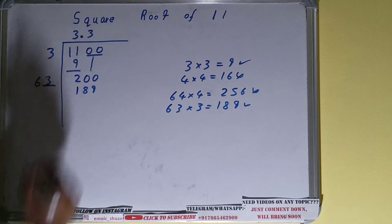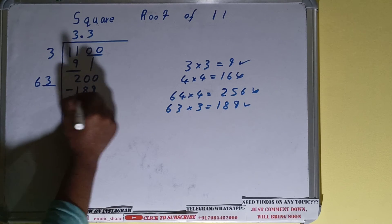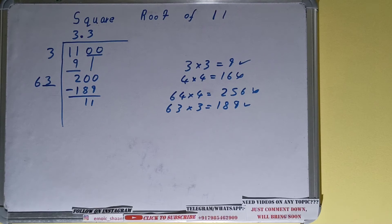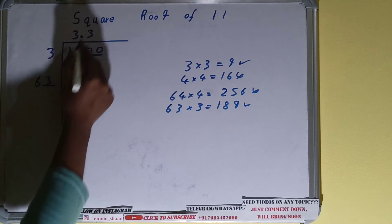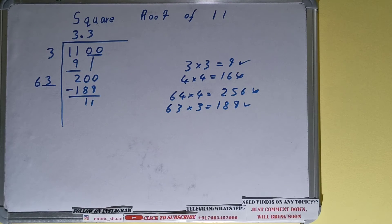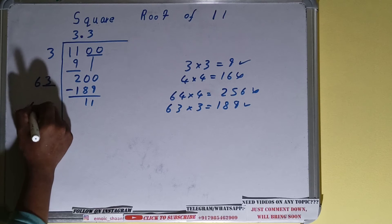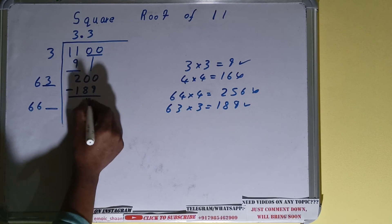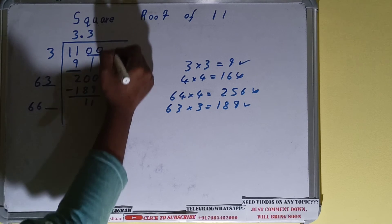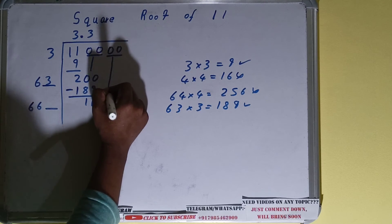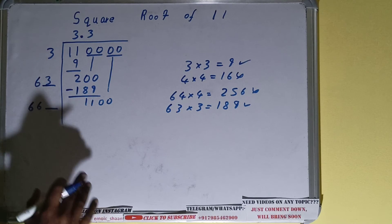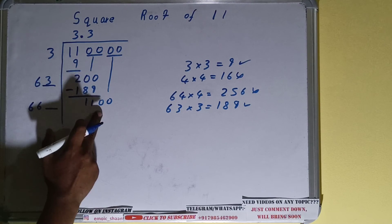We'll be left with 11. Now again, same thing we need to do with the divisor. 63 plus 3, because we multiplied with 3, right? So we'll have 66 with one digit extra. And for this number, because this has become smaller, we'll consider one more pair of zeros and we'll bring it down. We'll have 1100.